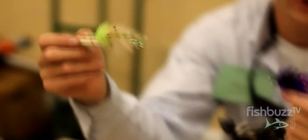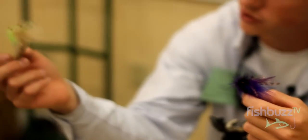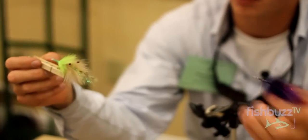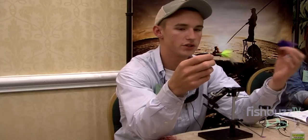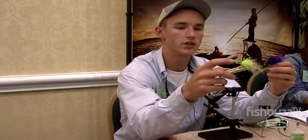When the sun's real high, you want to throw something with a lighter color. You can also tie this in black and red, or yellow and chartreuse. I like the tan and chartreuse because it's still got that bright chartreuse, and the tan really adds to it and makes it look real crabby moving through the water. They hammer it.